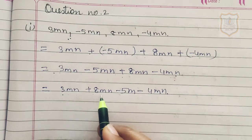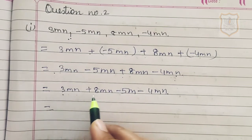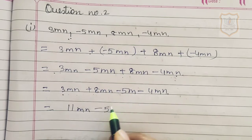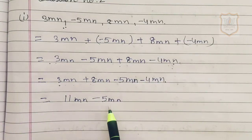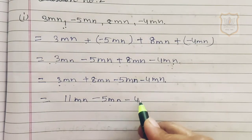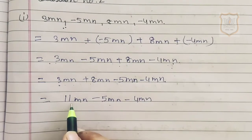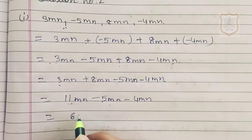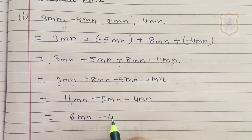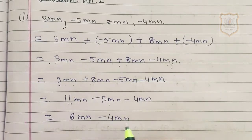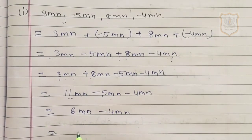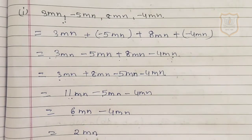3mn plus 8mn gives 11mn. Then 11mn minus 5mn gives 6mn. Then 6mn minus 4mn gives 2mn. So the answer is 2mn.